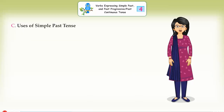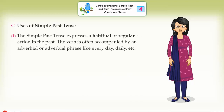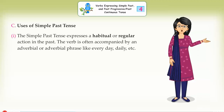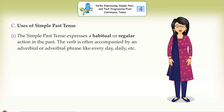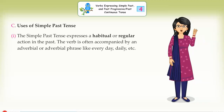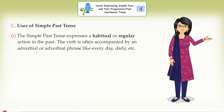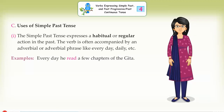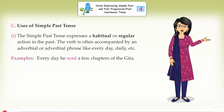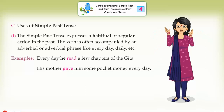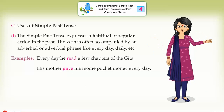Uses of simple past tense. First, the simple past tense expresses a habitual or regular action in the past. The verb is often accompanied by an adverbial or adverbial phrase like everyday, daily, etc. Examples: Every day he read a few chapters of the Gita. His mother gave him some pocket money everyday.